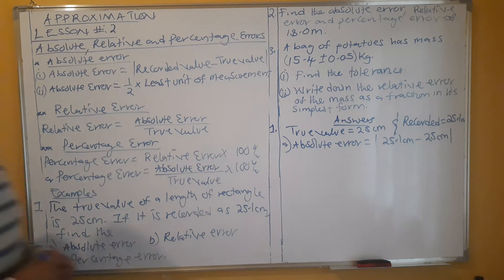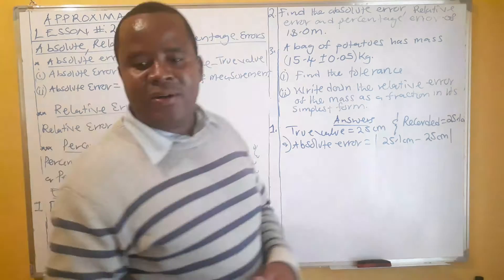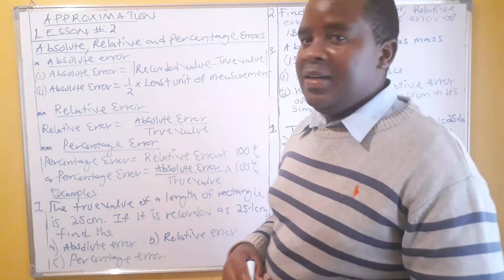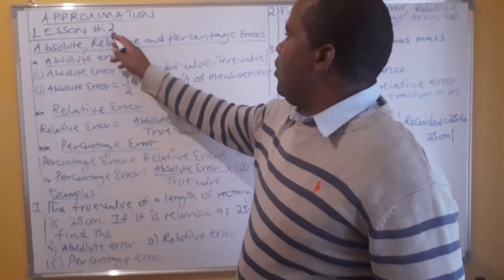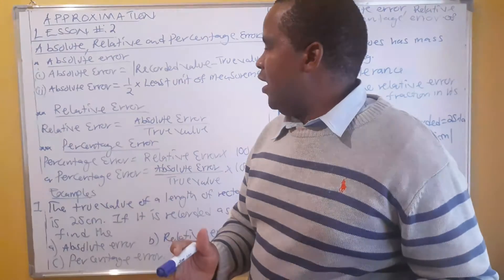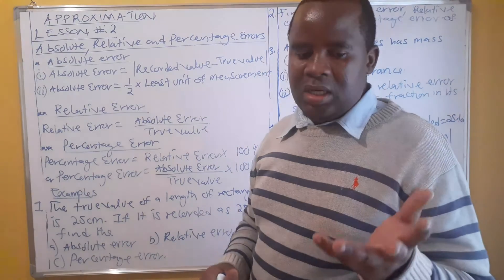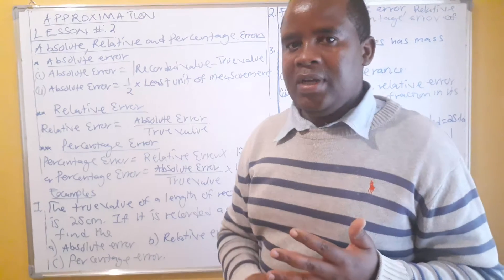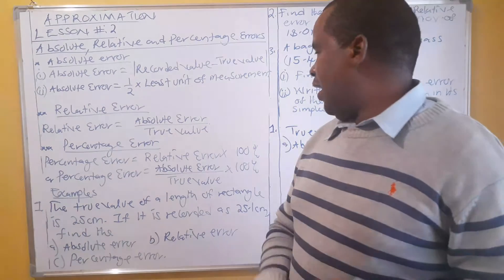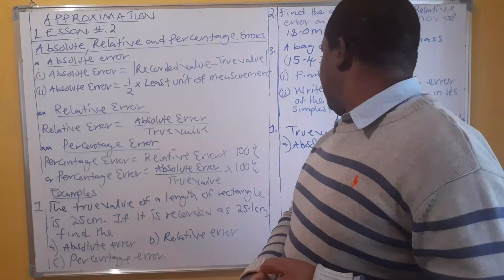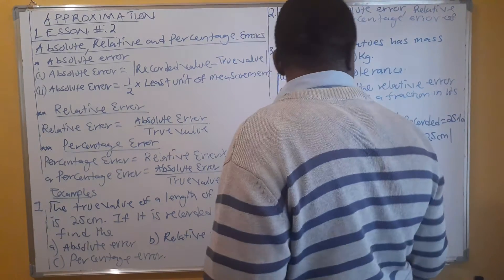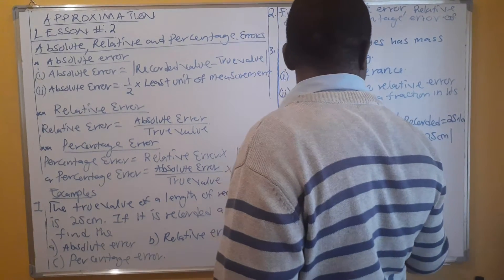Welcome to our YouTube channel where we present mathematics lessons. In this lesson, which is lesson number two, we continue dealing with approximation. Specifically, we deal with three things: absolute error, relative error, and percentage error.